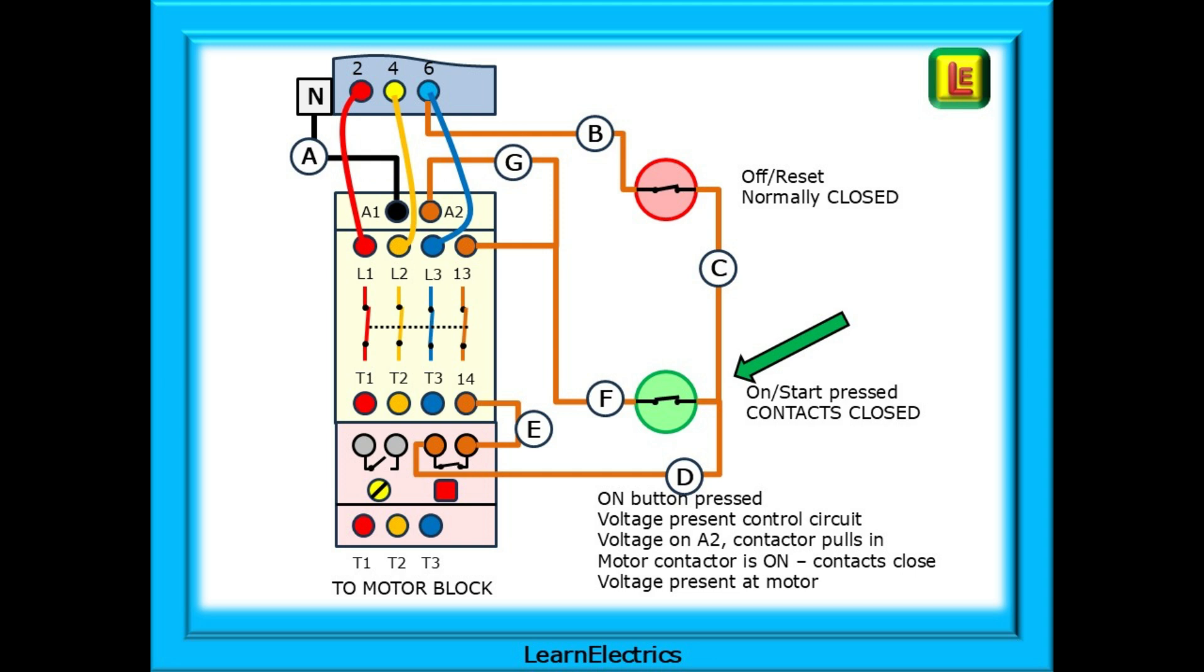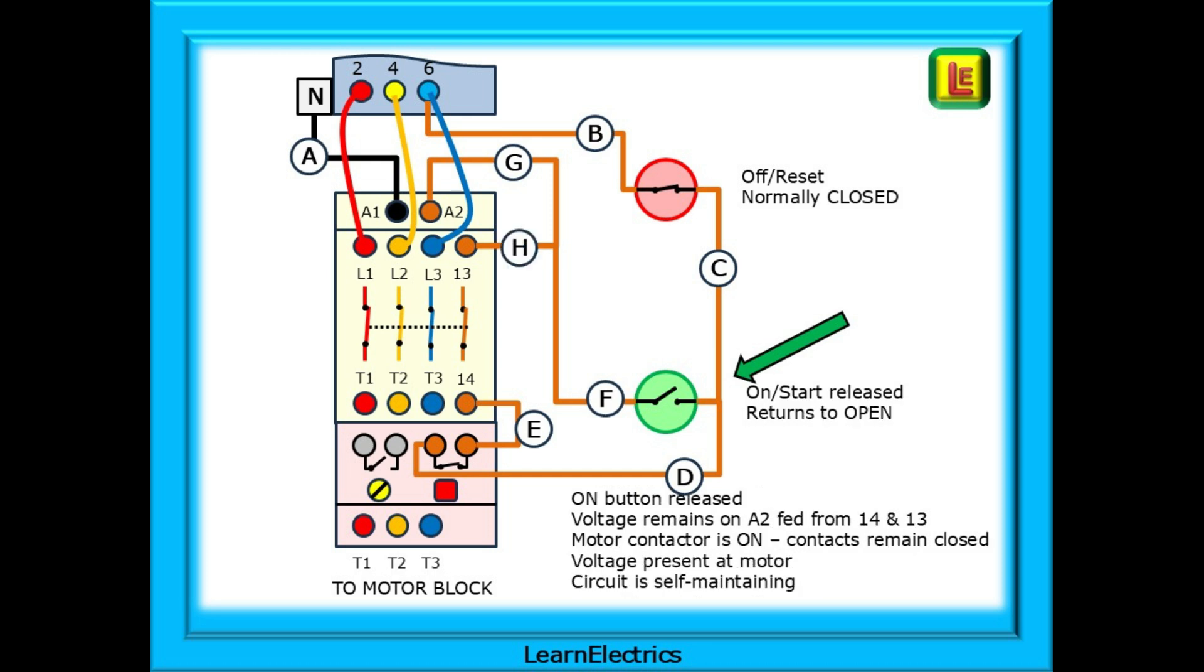With 230 volts between A2 and the neutral at A1, the contactor coil is energised and pulls the contactor in and closes the contacts. 400 volts can now pass along L1-T1, L2-T2, and L3-T3 to the motor. 230 volts can also travel through terminal 14 to terminal 13. We can now release the start switch as the circuit will hold itself on as the 230 volts at terminal 13 will pass along wire H to wire G and into terminal A2 where it will continue to energise the contactor coil. The contactor will remain in the energised state. The relay contacts will remain in the closed positions and the voltages required will continue to flow. The contactor is electrically locked into the on position and is said to be self-maintaining.